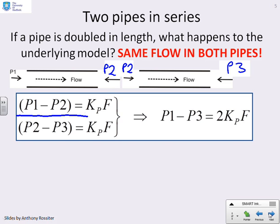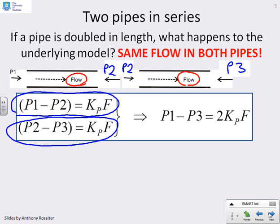So you'll see for the left-hand pipe, I've got this equation here. p1 minus p2 equals kp times f. And for the right-hand pipe, I've got this model here. Yes, I've got that the right way around. p2 minus p3 equals kp times f. Now, the key thing to note is this flow here must be the same as this flow here, because these two pipes are connected in series, and we're assuming we've got a steady flow. And therefore, this f here is the same as this f here.